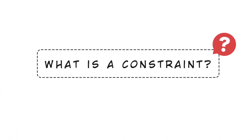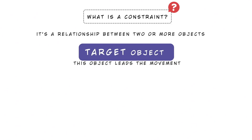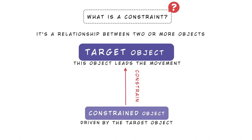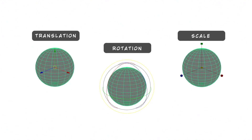What is a constraint? It's basically a relationship between two or more objects. One is the target object, the one that leads the movement or the position, and the other is the constrained object that is influenced by the target, so it doesn't move independently but is driven by the target object. The type of constraint depends on the axis you need to constrain to the lead object: translation, rotation, or scale.